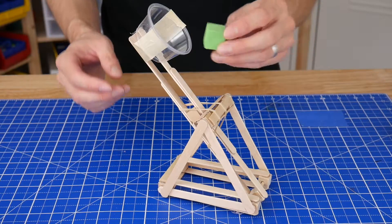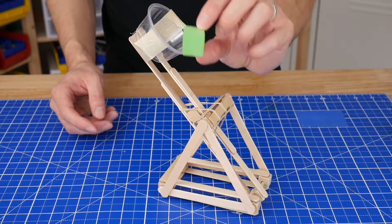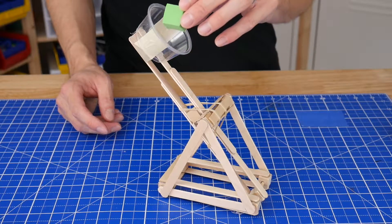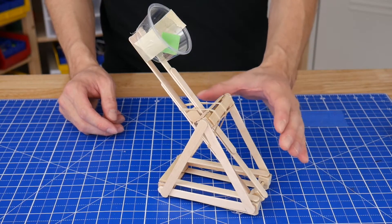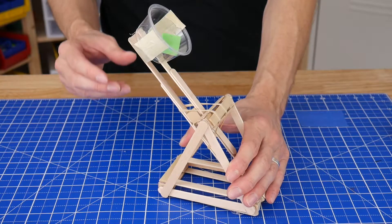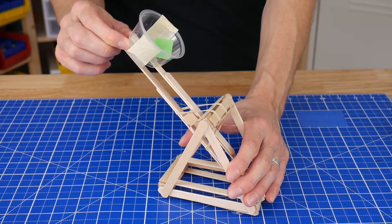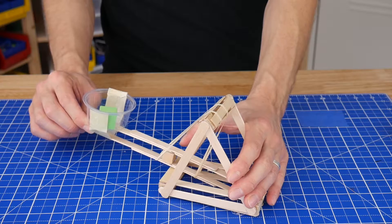To launch the catapult, load your projectile of choice. I like using these foam cubes because they're dense enough to go far, but they're not going to break anything. Then use one hand to hold down the base, while the other hand grabs the cube at the very end of the catapult arm. Pull all the way back, and then just let go.